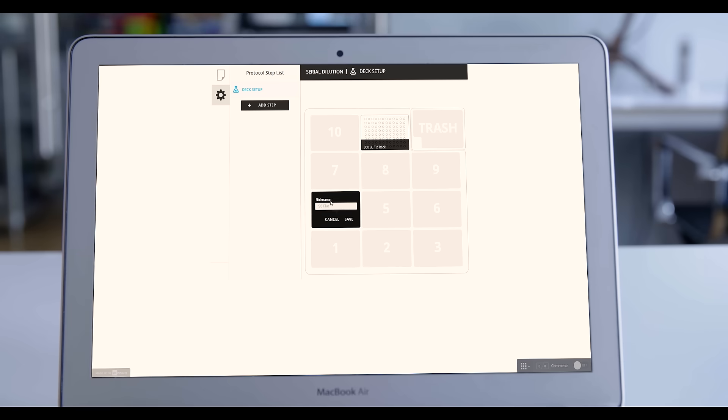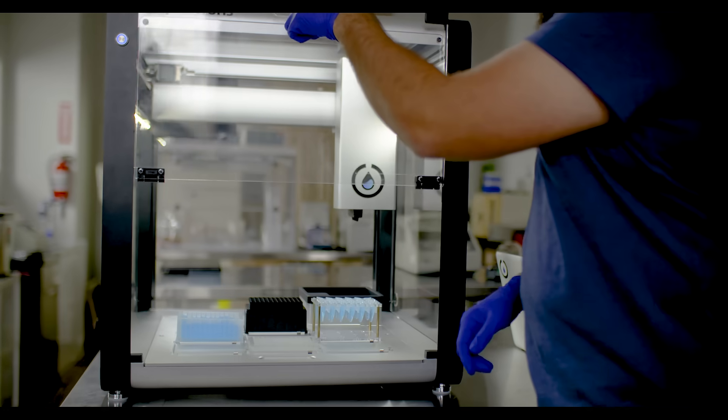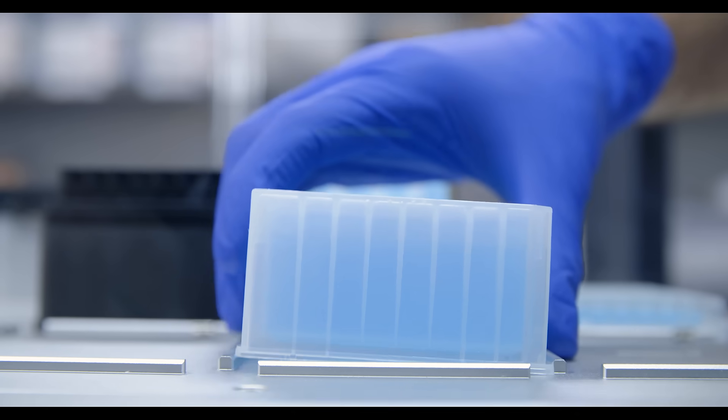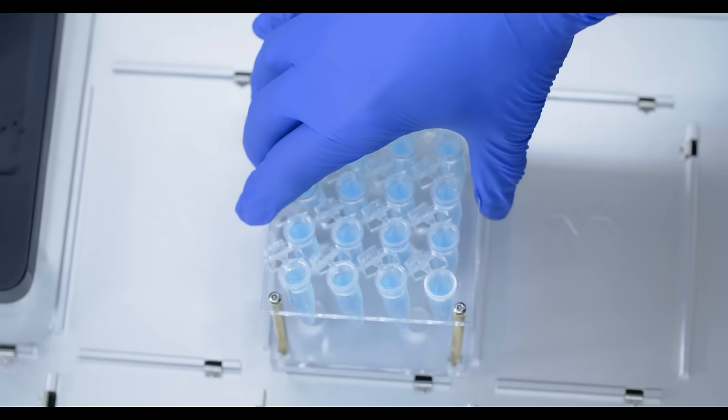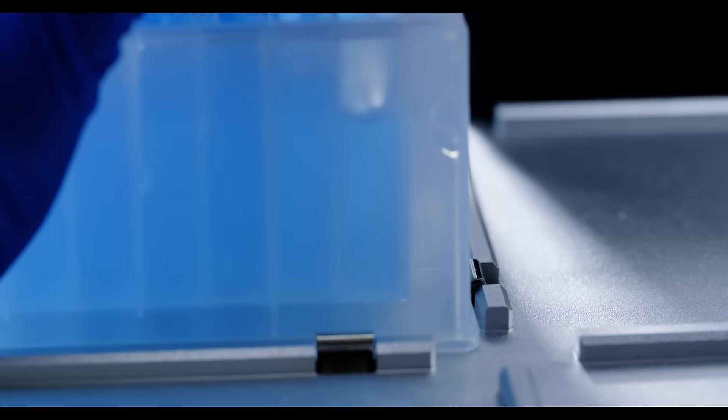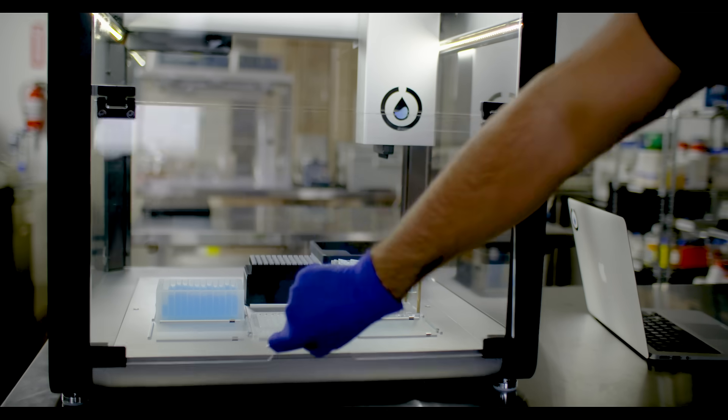Once you have exactly the protocol you want, you can simply send it to the robot to be run. And it's easy to set up a new run. All you need to do is remove your samples from the previous run and put on the new reagents and consumables, securing them easily on the precision-made deck.